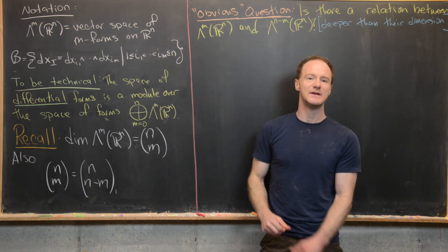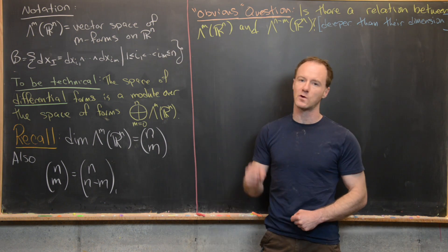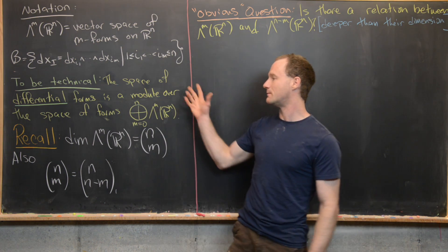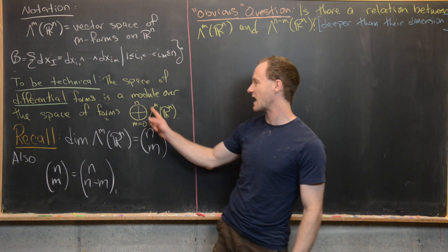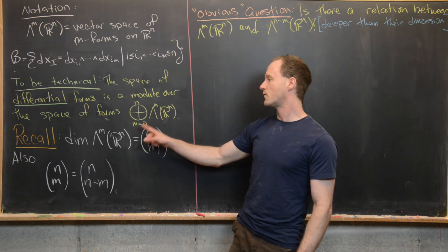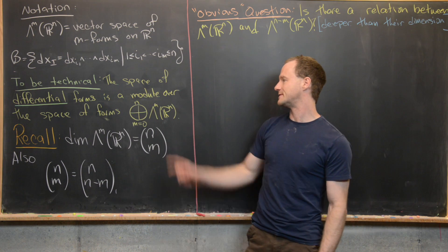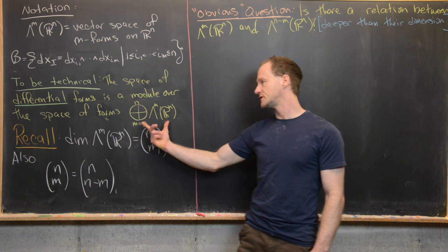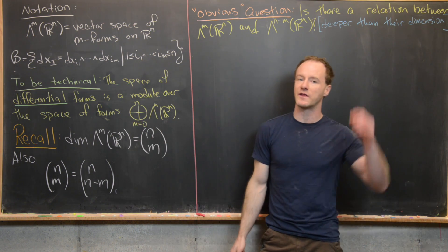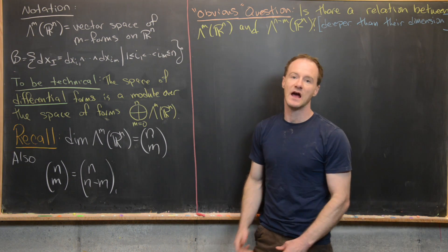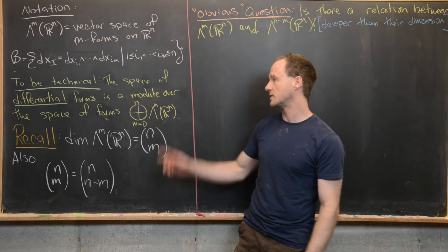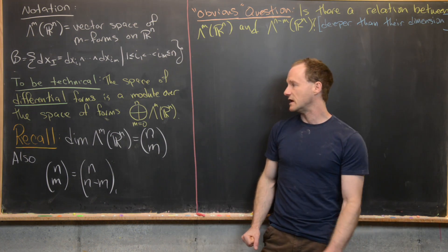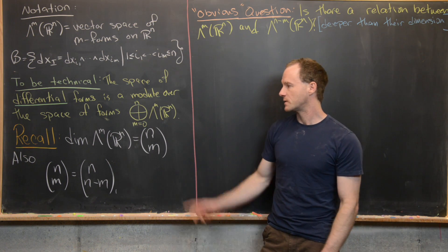To be technical about the relationship between differential forms and just forms: the space of differential forms is a module over the space of all forms. We have this direct sum of zero forms, one forms, two forms, all the way up to N forms on R^M. This forms an associative but non-commutative algebra, where the wedge product is our multiplication. Any algebra has some sort of module structure, and these differential forms form a module over the space of forms.